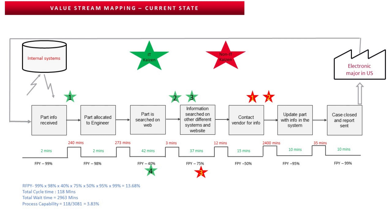The total cycle time was 118 minutes and total wait time was 2,963 minutes. The overall process capability was 118 divided by the sum of cycle time plus wait time, giving 3.83%. The process capability formula is: total cycle time divided by total time (cycle time plus wait time). The team also identified IT and non-IT kaizens — IT kaizens marked in green and non-IT kaizens in red.